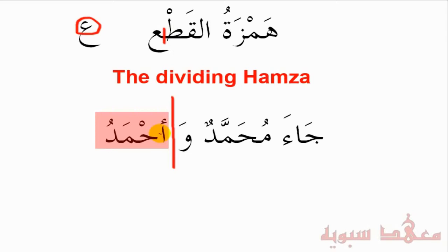Finally, here we have the verb Ja'a. Notice we have an elongation of the Alif — there is actually a Sukun there. So when there's an elongation, there's a Sukun there, and because there's a Sukun before the Hamza, the Hamza is written all alone. That's briefly about Hamzatul Qat'a, and in the next lesson we'll speak about Hamzatul Wasl.